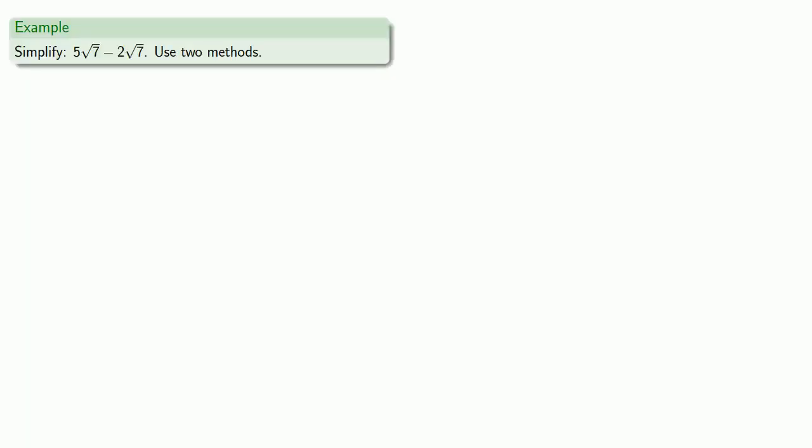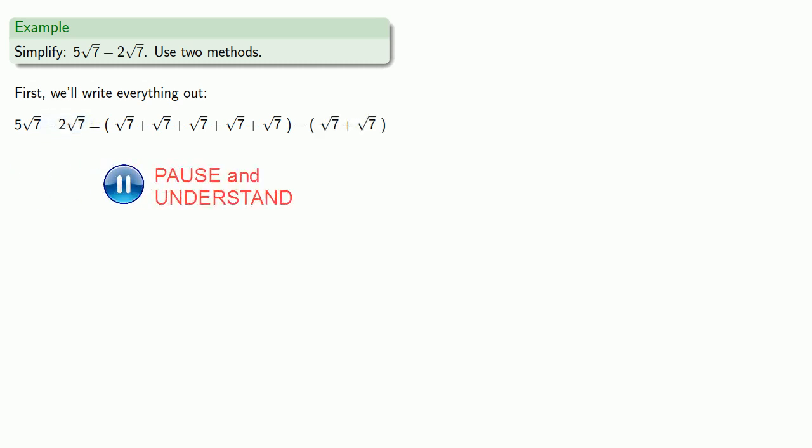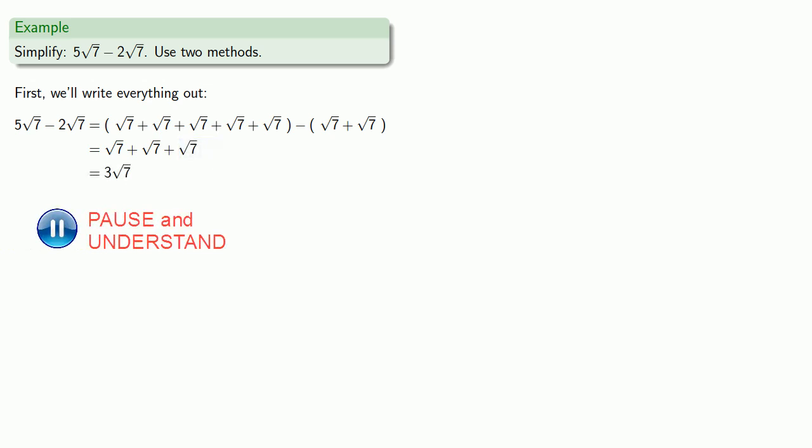What about subtraction? Well, let's try to simplify 5 square root of 7 minus 2 square root of 7, and let's use two different methods. First, let's write everything out. 5 square root of 7, that's 1, 2, 3, 4, 5 square root of 7 minus 2 square root of 7. That means we're going to be subtracting 2 square root of 7. Now, remember, this minus means we're going to remove the square root of 7, so we're going to get rid of two of these square roots of 7, how about these two, and we'll be left with this, which is a bunch of square roots of 7, in fact it's 1, 2, 3 square roots of 7.